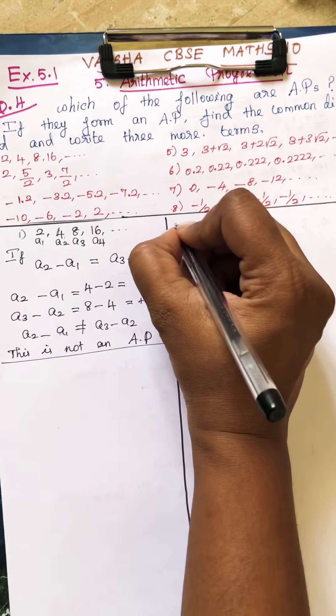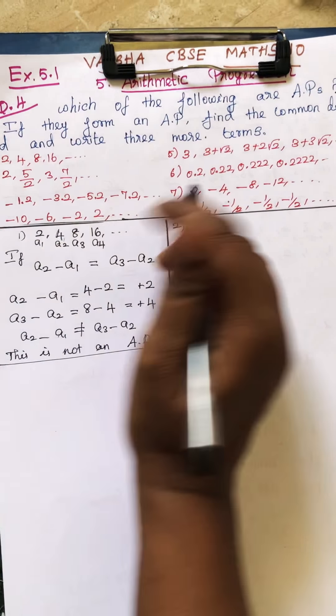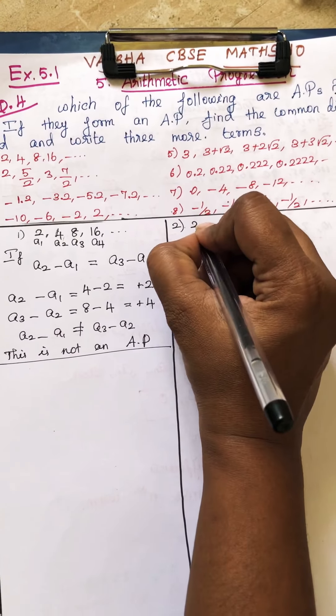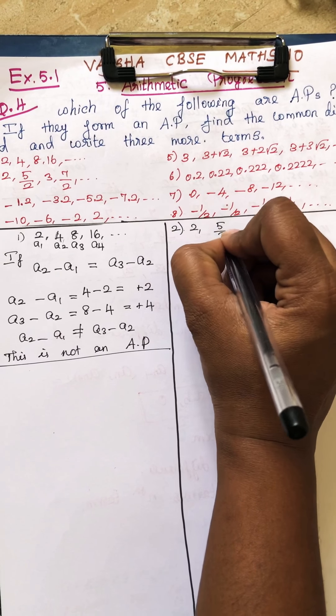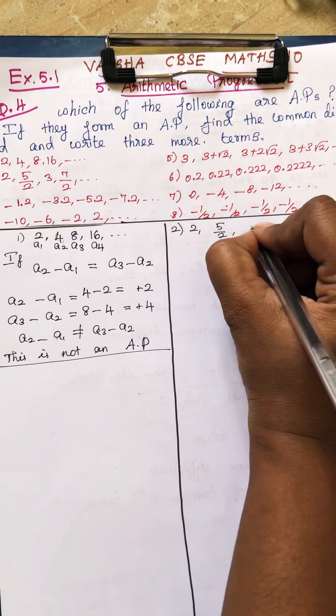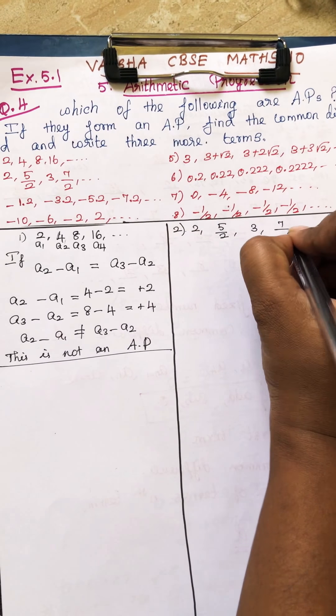So that is your first answer. Now go to the second sum. The second sum is: 2, 5/2, 3, and 7/2.